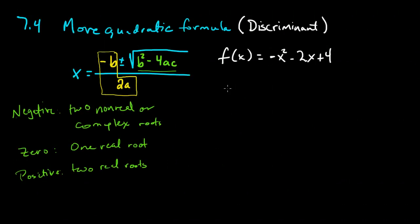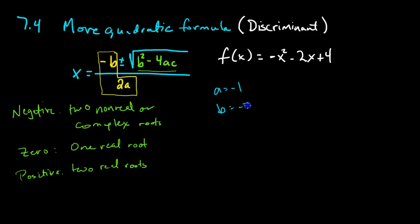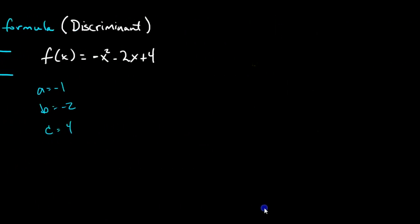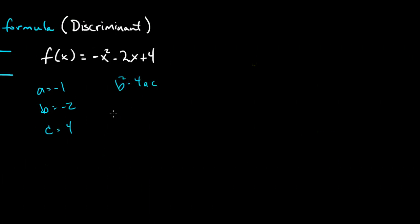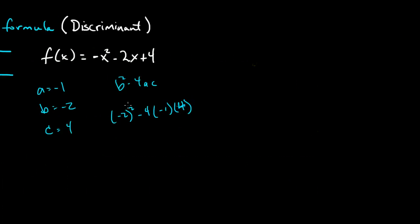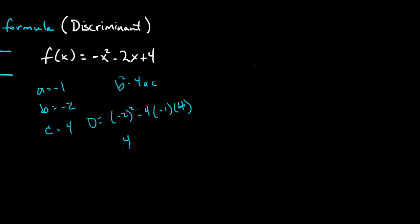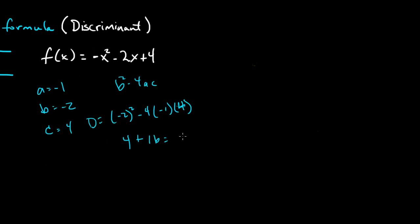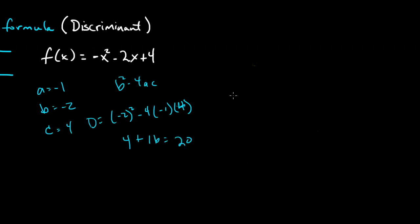Let's do one last example that has a negative a. So here our a is negative 1, our b is negative 2, and our c is 4. Effectively, this changes our parabola from opening up to opening down. The discriminant will be negative 2 squared minus 4 times negative 1 times 4. Negative 2 squared is 4, and negative times a negative is a positive, giving us 16. So we have a discriminant of 20, which means two real roots.